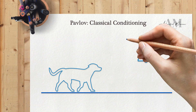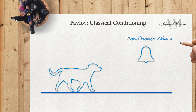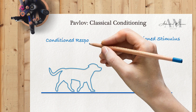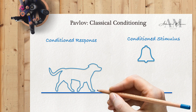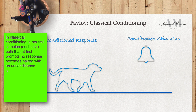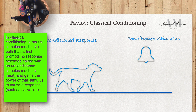Following repeated presentations of the bell and the meat simultaneously, the dog begins to salivate merely upon hearing the bell. This phenomenon is known as classical conditioning. Such classical conditioning experiments demonstrate the impact of learning on behavior.